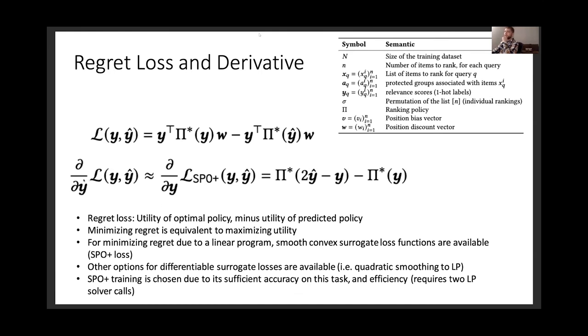So I have the calculation for the loss in our model. It's called the regret. So regret is just the utility of the optimal policy minus the utility of our predicted policy at any stage. Minimizing that is equivalent to maximizing the expected utility. What they call the SPO plus loss in this methodology is a convex surrogate loss function to the regret. And the property that we just want to make clear here is that its gradient can be calculated by two calls to a linear programming solver,